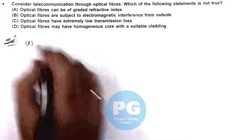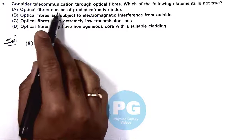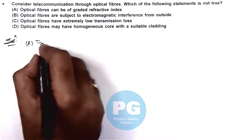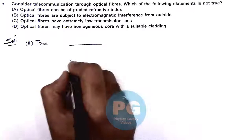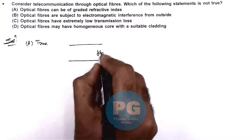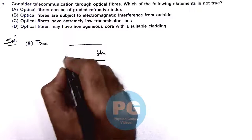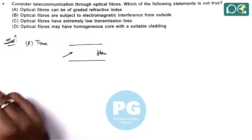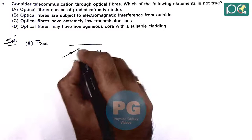For option A here we can see it is saying optical fibers can be of graded refractive index, that's true, because in case of optical fiber, if this fiber, we know one light incident on optical fiber and inside it will be internally reflected.